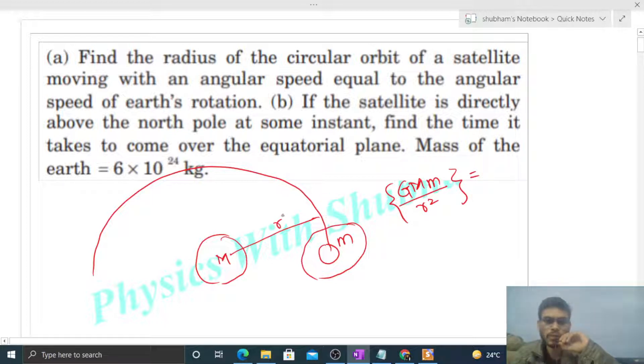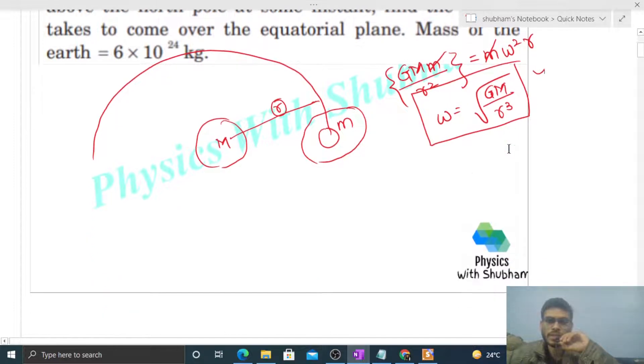So centripetal force is M times omega squared times small r. From here you can easily calculate the value of omega, that will be square root of capital G times capital M divided by small r cubed. If you directly remember this value it's fine, otherwise this is a simple derivation you can quickly do.